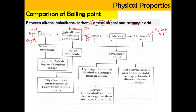For amine, alcohol, and carboxylic acid, all three can form hydrogen bonding. However, alcohol has a higher boiling point than amine because the hydrogen bond in alcohol is stronger — oxygen in alcohol is more electronegative than nitrogen in amine, so O–H forms a stronger hydrogen bond than N–H. Carboxylic acid has the highest boiling point because it forms stable hydrogen-bonded dimers between molecules, requiring the most energy to break.